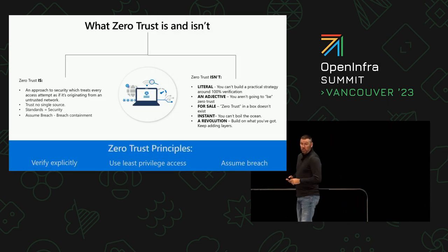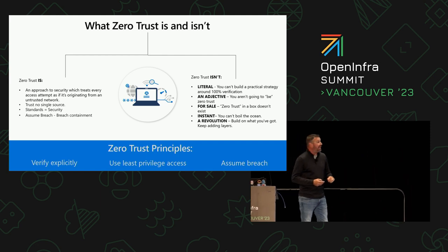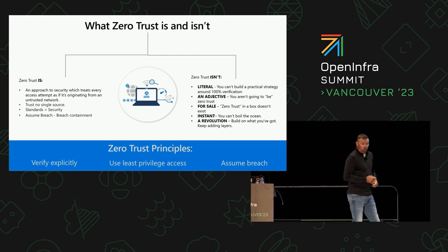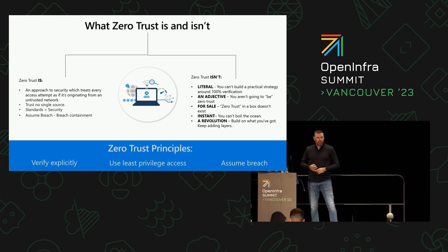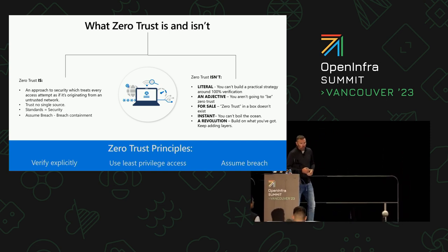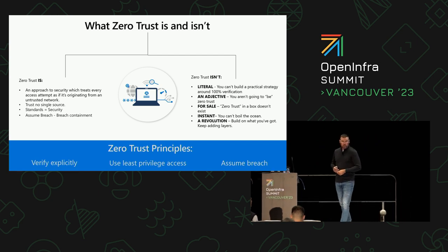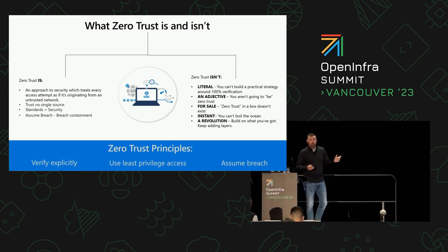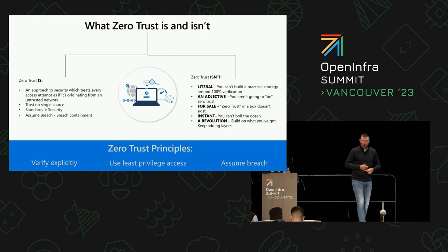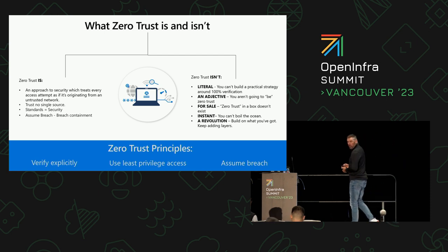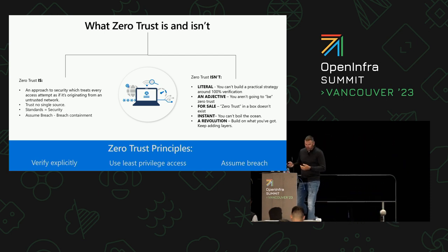So what zero-trust is and what it is not. It is an approach to security which treats every access attempt as if it's originating from an untrusted network — trust no single source, standards equal security, and assume breach. What it is not: it is not literal, not an adjective, not for sale, not instant, and not a revolution.